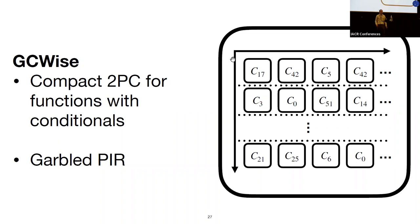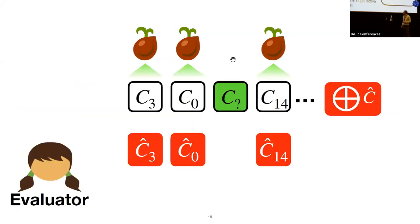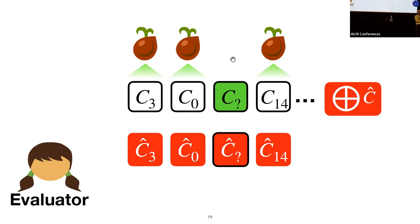Thank you very much, David. Are there any questions? [Audience member]: Thanks for the great talk. On slide 19, you said it's fine to reveal the identity of the inactive circuits because of sampling with replacement, but what if the active circuit is the same as one of the others — since I know the seed, could I check the identity? [David]: The important point is that even if two circuits are the same, we garble them starting from different pseudorandom seeds, so even if you see two encryptions of the same circuit, you can't tell they're the same circuit.